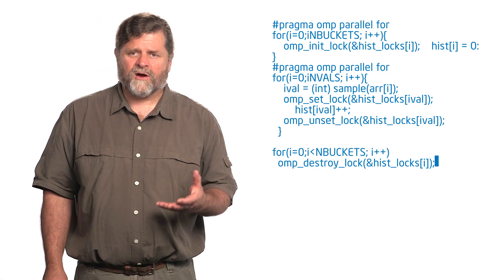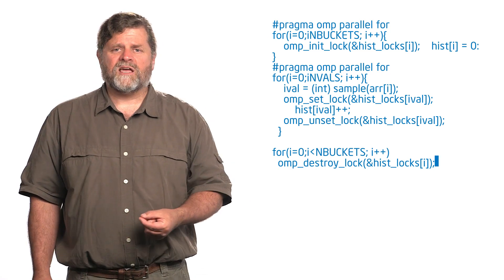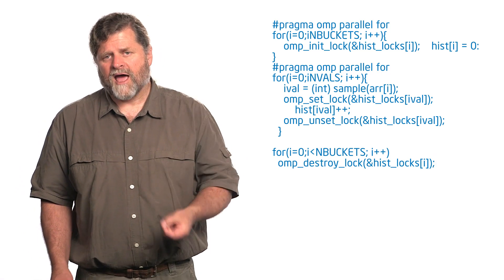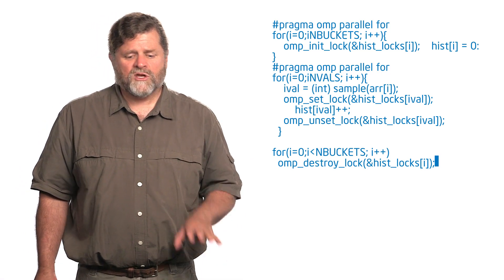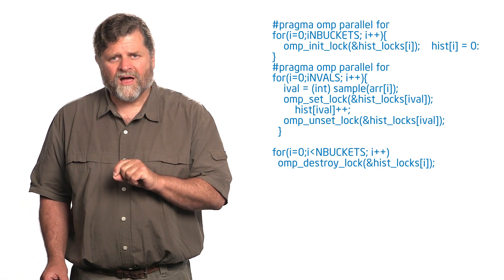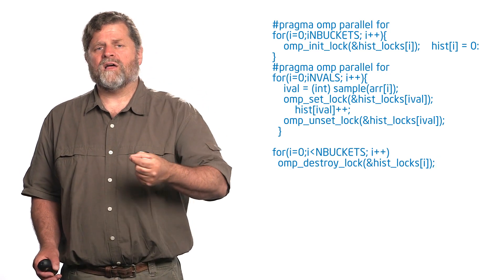So now we come into the next parallel for loop where I'm going to actually go through and sample some data to decide which bin it goes into. And then I will update that bin of the histogram. And so you can see omp_set_lock for that histogram lock value. If it's not being held, I can go through and do that update.